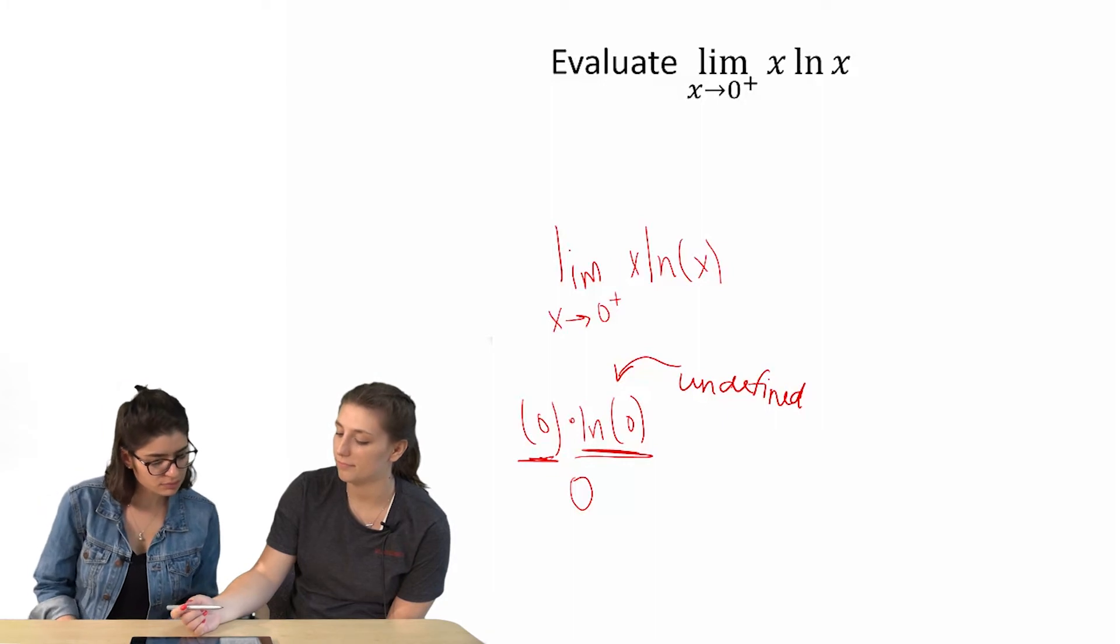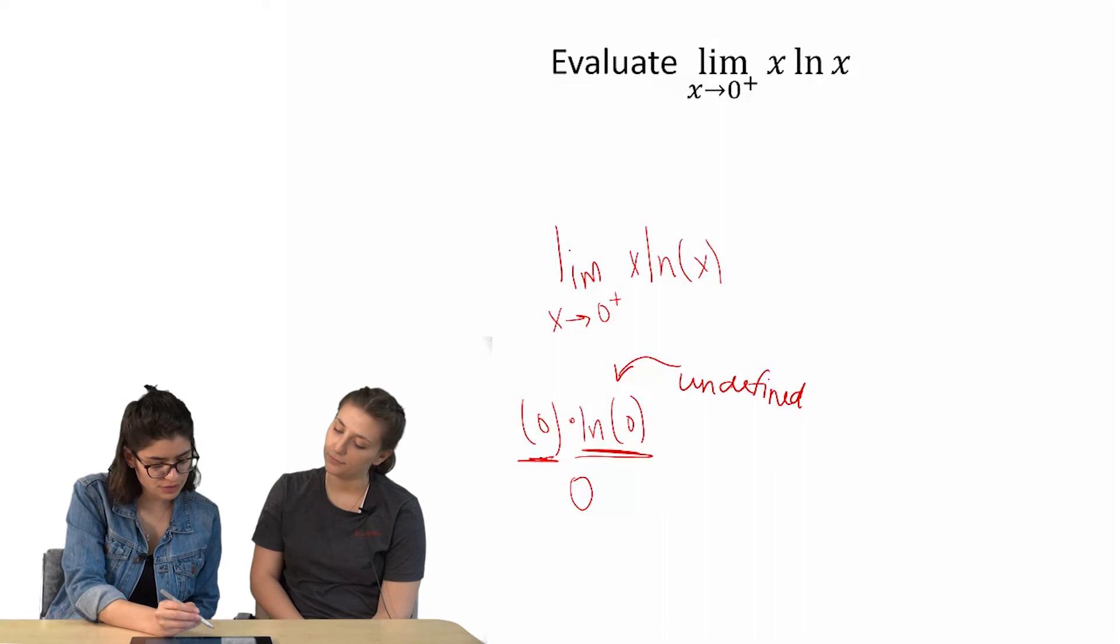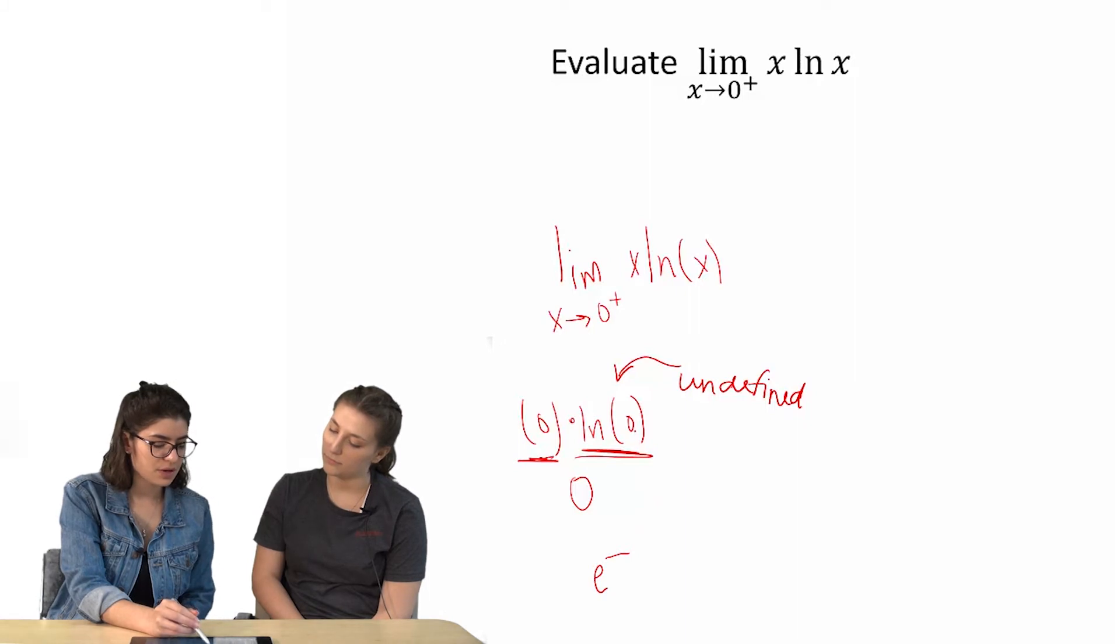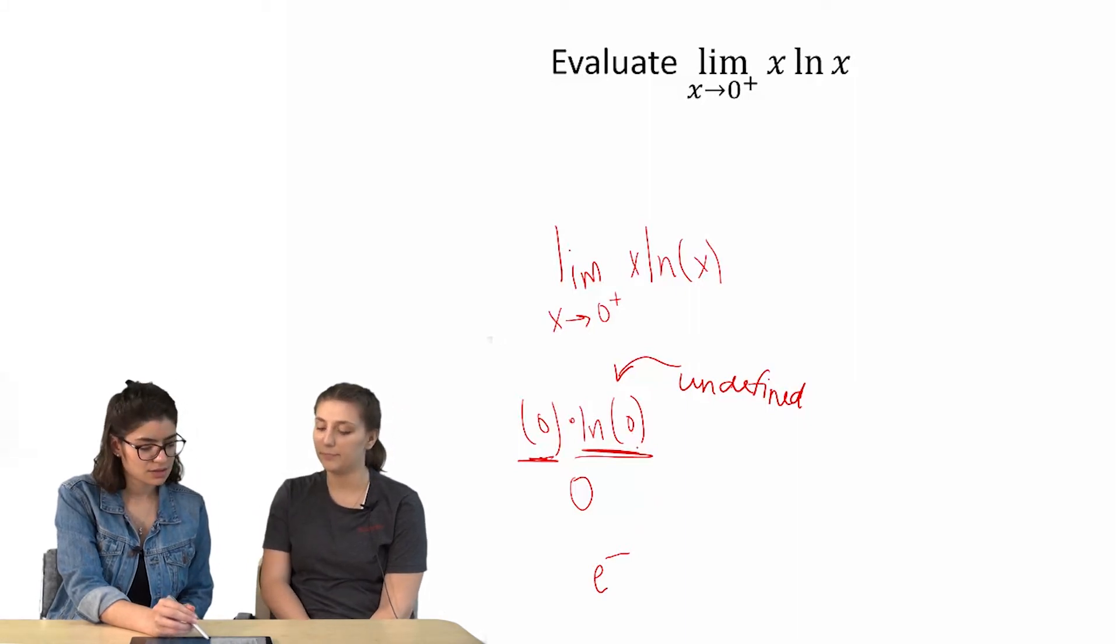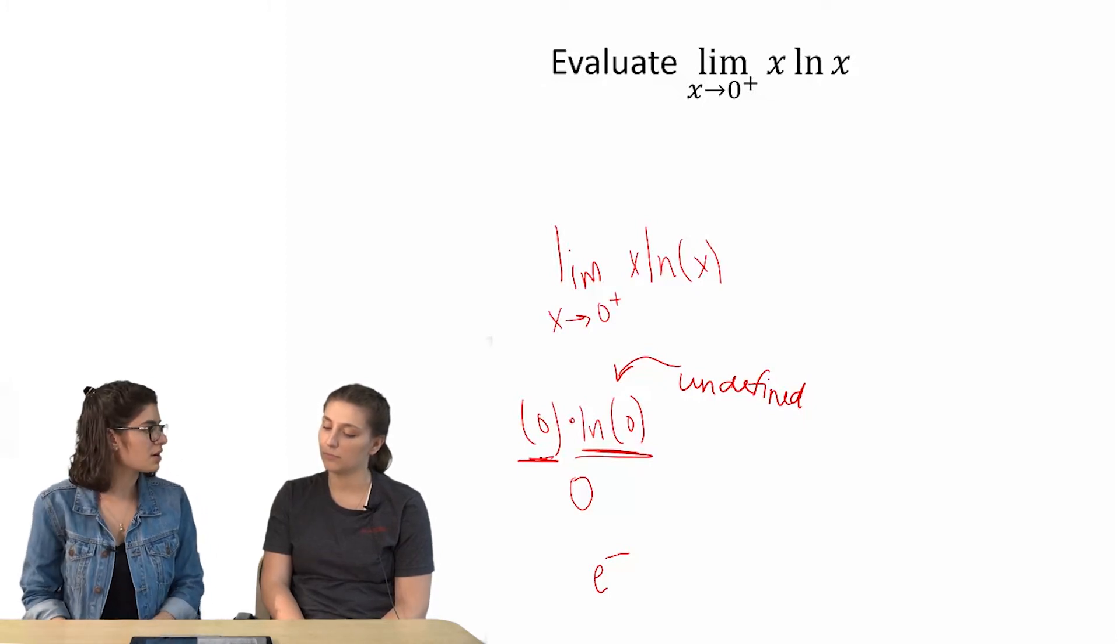Okay. Well, what if the way I think about natural log is e to something is going to give you zero in this case. So e to something would give you whatever is in the natural log. So e to what would give us zero?